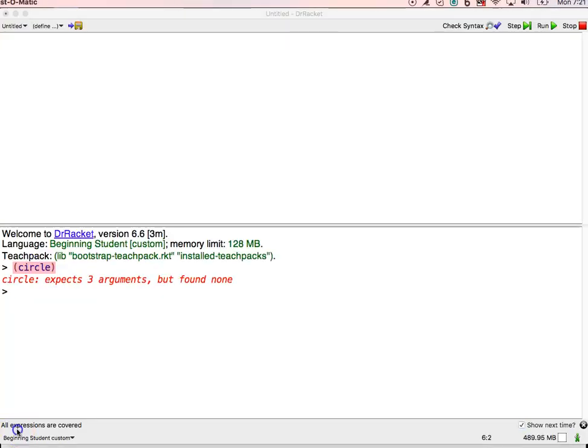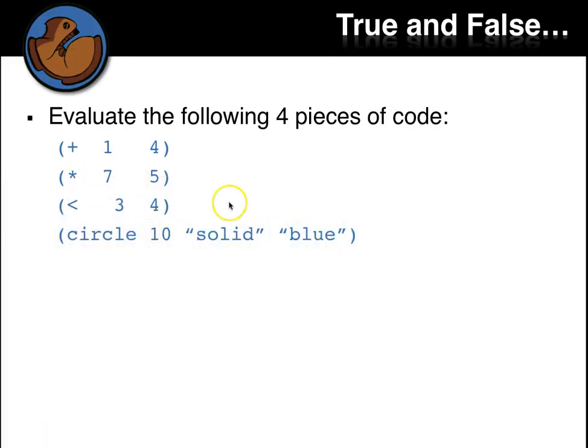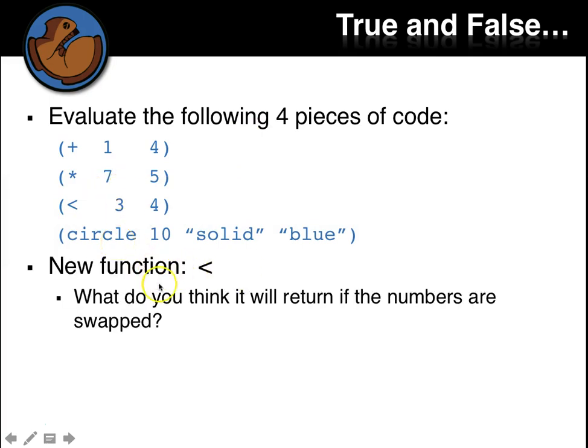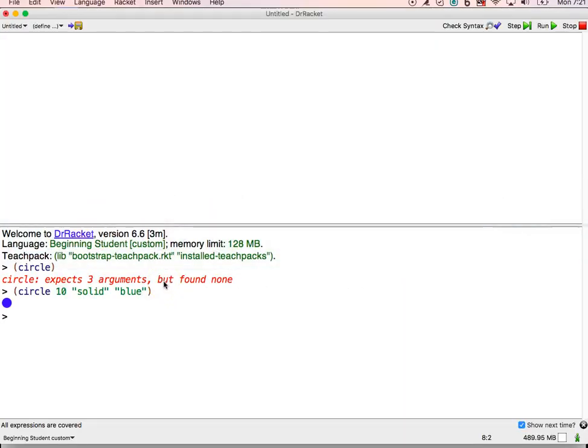Let's do this last one. I don't think I have the teach pack. I added the bootstrap teach pack back because I switched computers. Just let's do a circle. And remember that we saw something strange or at least new for this less than function. What do we think would happen if the numbers are swapped? So let's go back to the one we looked at before. Less than three, four. True. See what happens if we swap. Four, three. What do you think will happen? False.